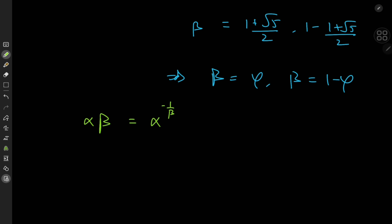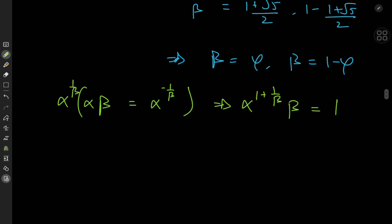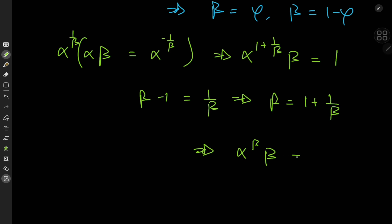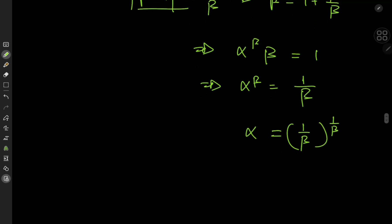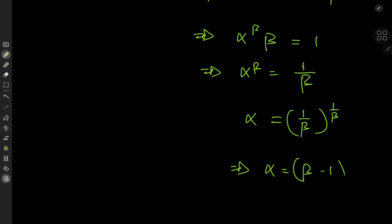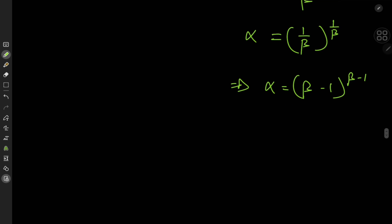For the α parameter, we take the coefficient equation and expand using α^(1/β). We get α^(1 + 1/β)·β = 1. Now, from the exponent equation β−1 = 1/β, we know that β = 1 + 1/β. So this becomes α^β·β = 1, which means α^β = 1/β = β−1. Therefore α = (β−1)^(β−1), giving two values of α corresponding to each value of β.